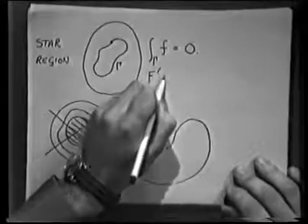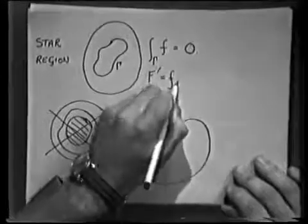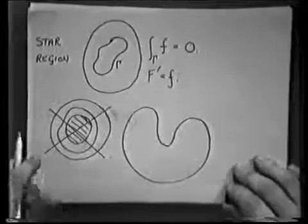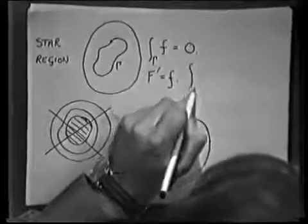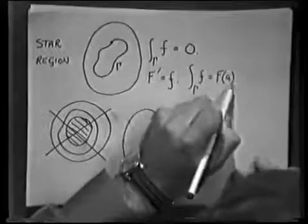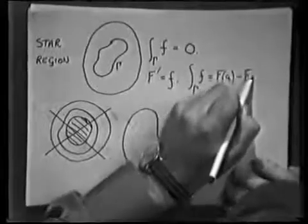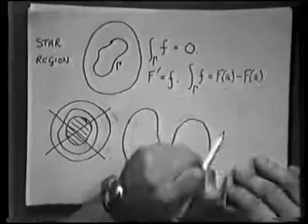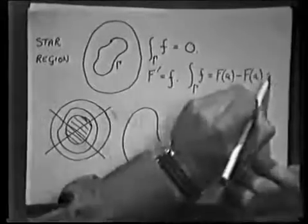We start at the end with the result that we want to prove, and we work backwards. We know that if we have an antiderivative theorem, then Cauchy's theorem is not too difficult to prove. An antiderivative was a function, capital F, such that F' equals our analytic function F. Then the fundamental theorem tells us that this integral is just the value of capital F at some point on the contour minus the value of capital F at the end point, which is the same point because it's a closed contour, and the result is obviously zero.